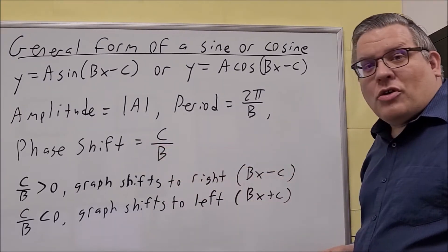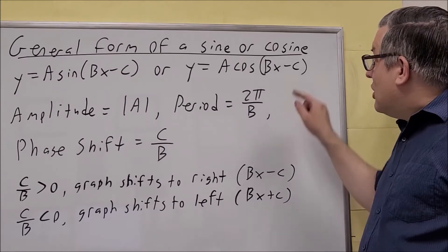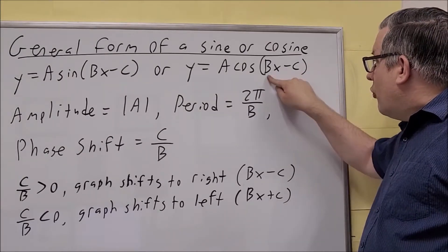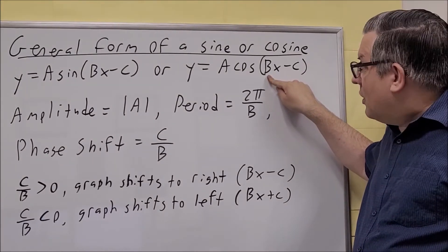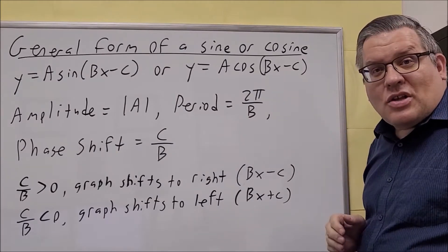And then we have our phase shift formula. Phase shift is going to be C over B. So it's this one over that one there.